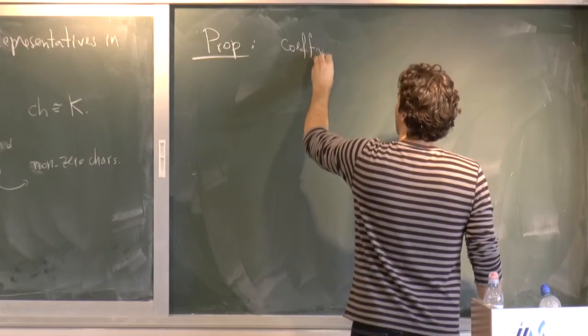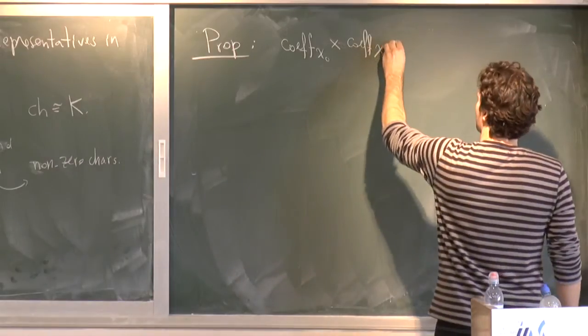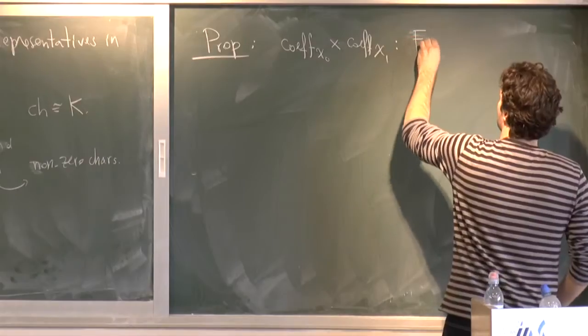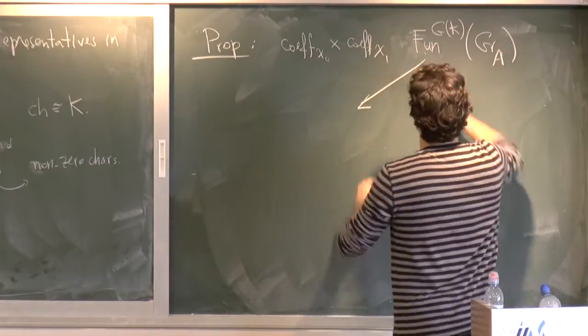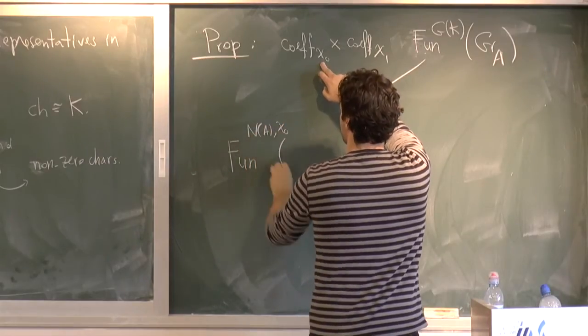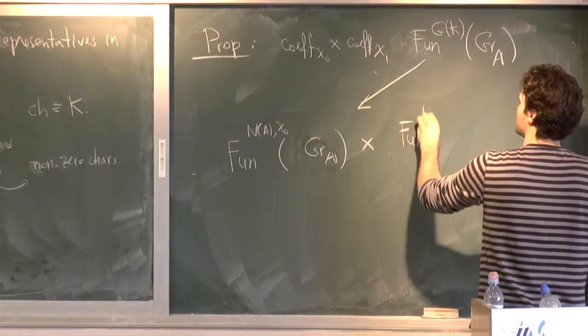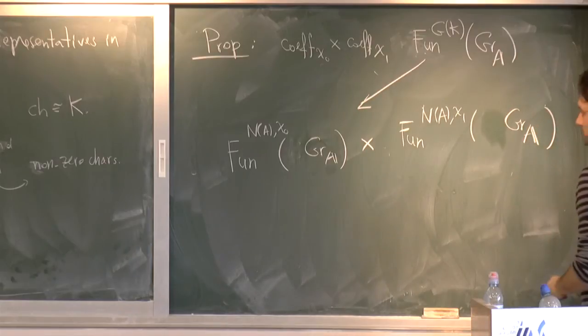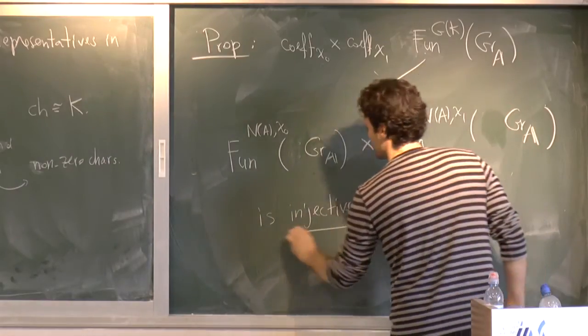What follows is a precise formulation of that, is that I have the map coefficient, Fourier, just the map Fourier coefficient with respect to chi 0, and the map Fourier coefficient with respect to chi 1, goes from automorphic functions, more space, goes from automorphic functions. into what? It's functions that are N of A chi 0 invariant on the same space, times functions that are N of A chi 1 invariant on the same space, that's injective.